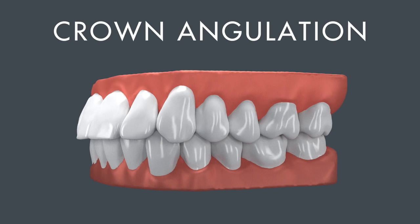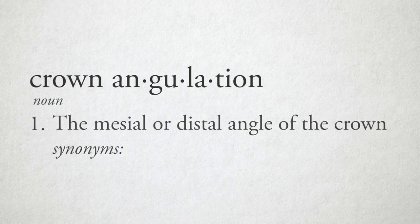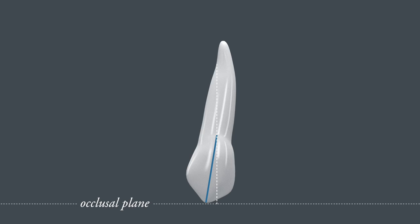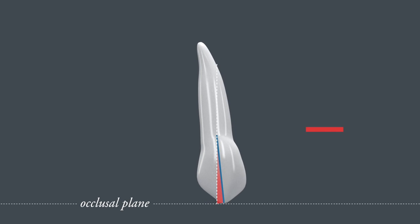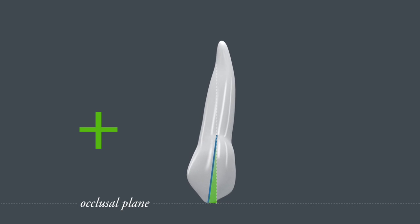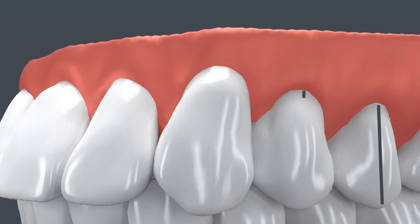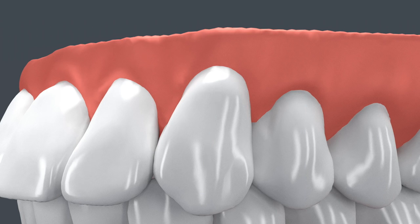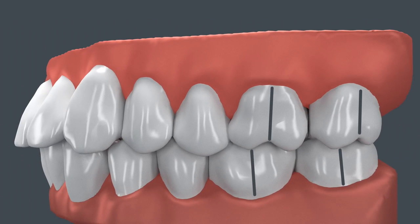Andrews' second key is crown angulation — the mesial or distal angle of the crown. Some doctors refer to crown angulation as tip. This is the angle formed by the facial axis of the clinical crown and a line perpendicular to the occlusal plane from a facial perspective. Crown angulation is considered positive if the occlusal portion of the facial axis is mesial to the gingival portion, and negative if it's distal. In an ideal arch, all the crowns should be angled positively — in other words, the crowns should tilt mesially from the gums. On all teeth except molars, the facial axis is the most prominent portion of the central lobe on the crown's facial surface. On molars, the facial axis is the buccal groove that separates the two large facial cusps.